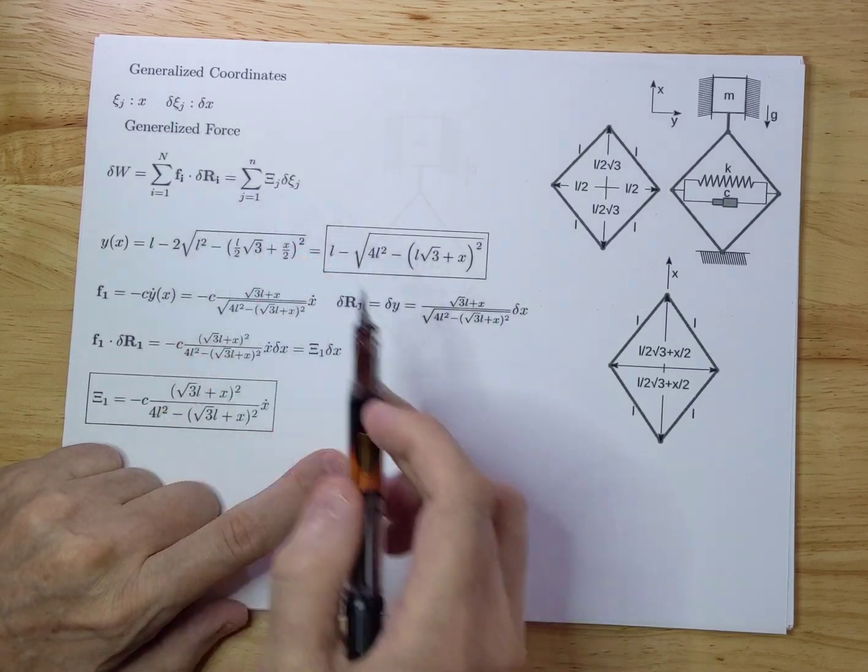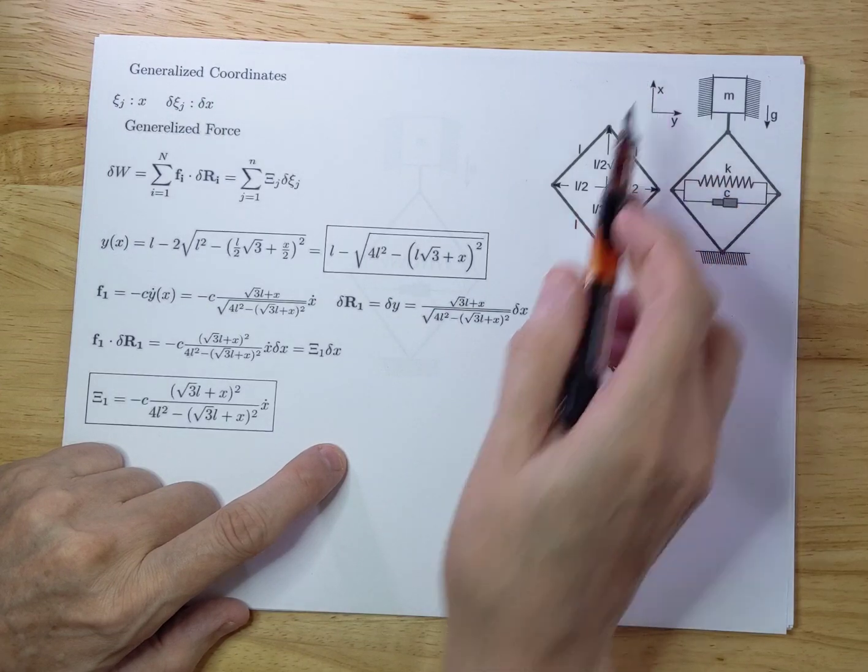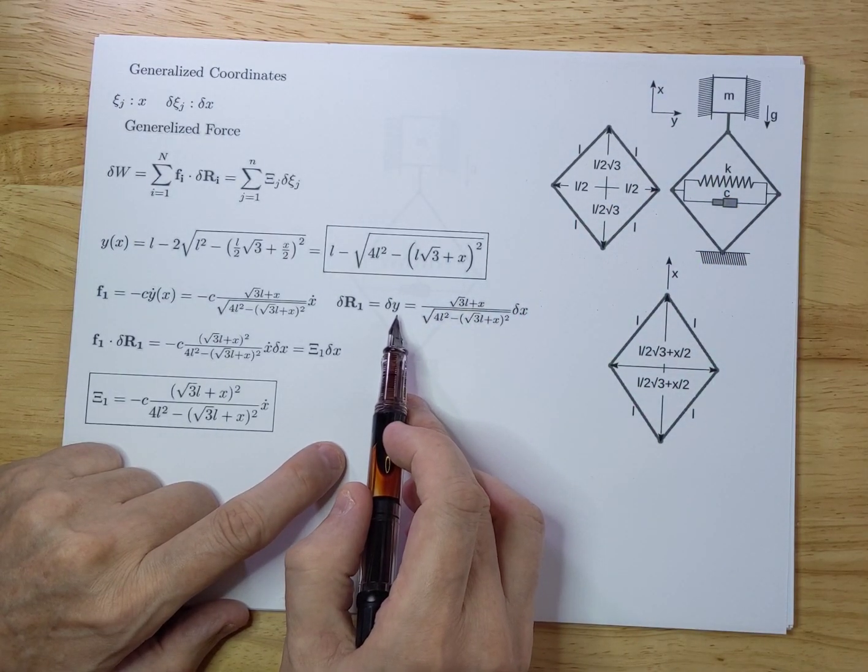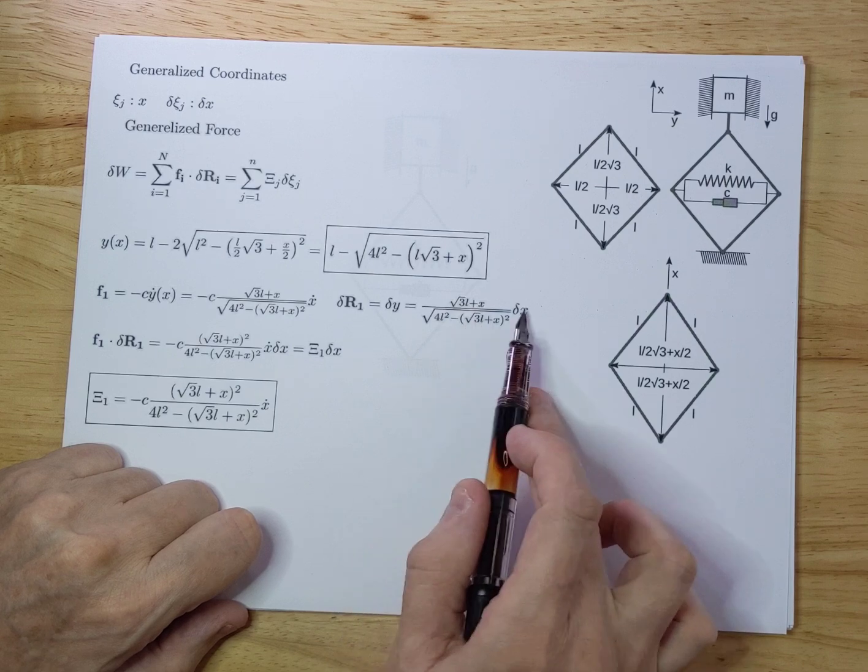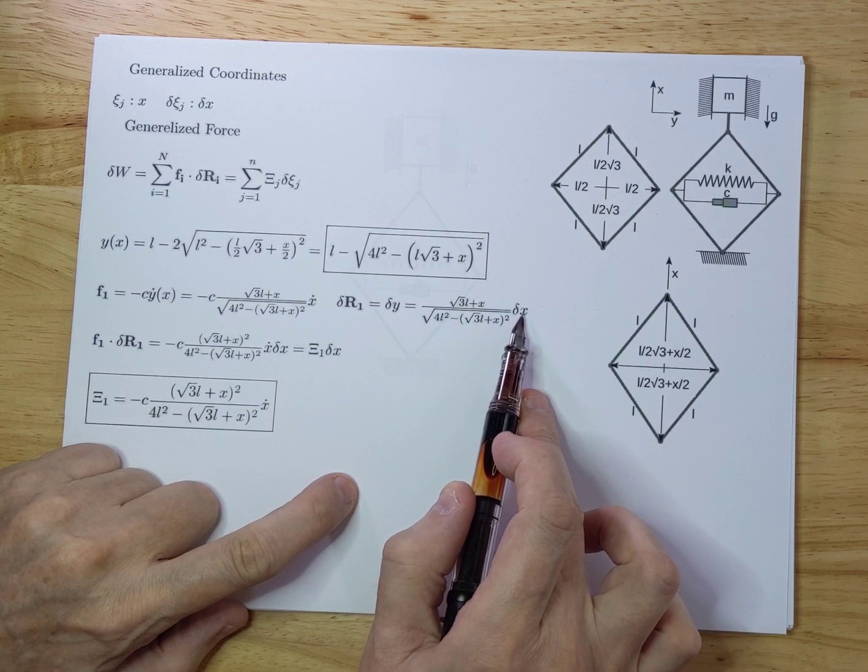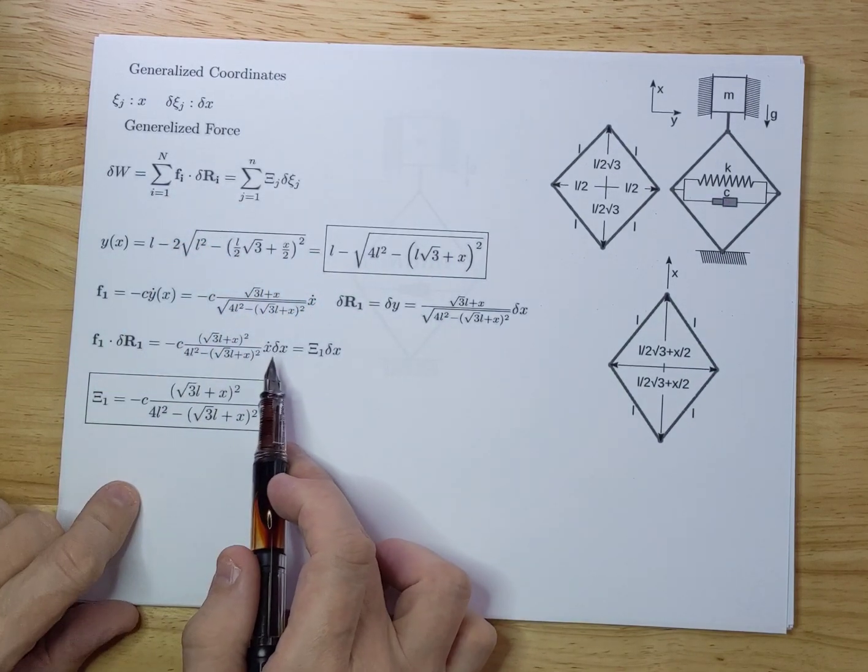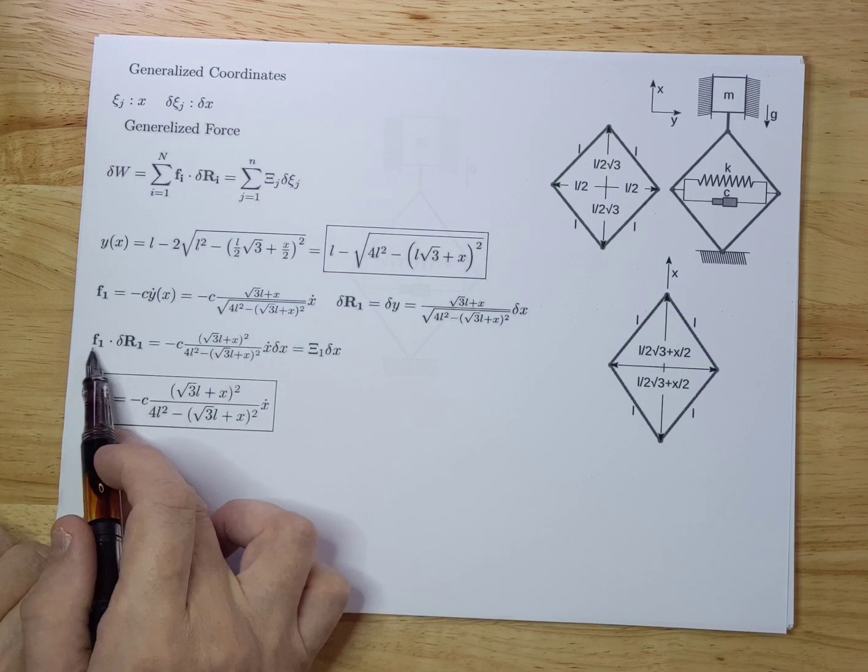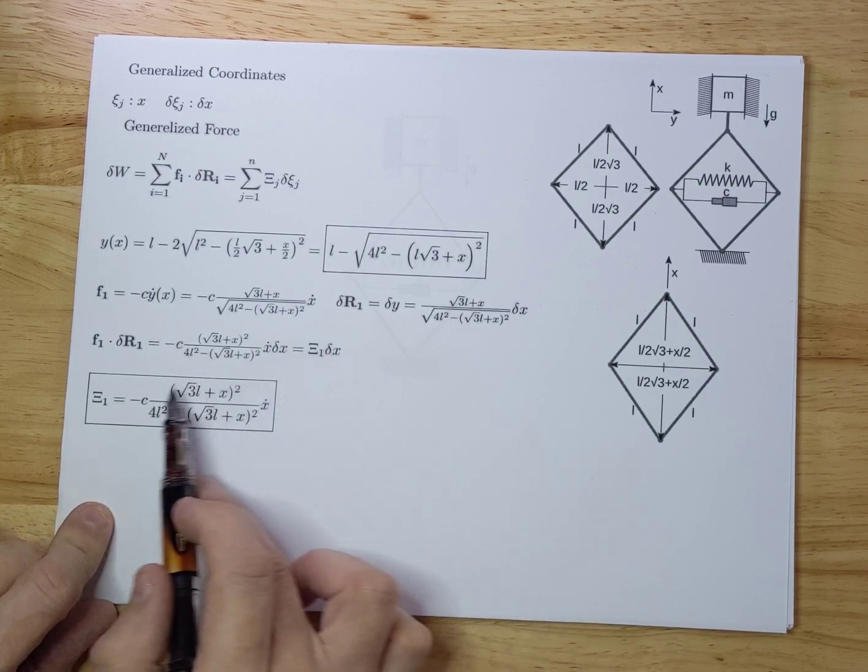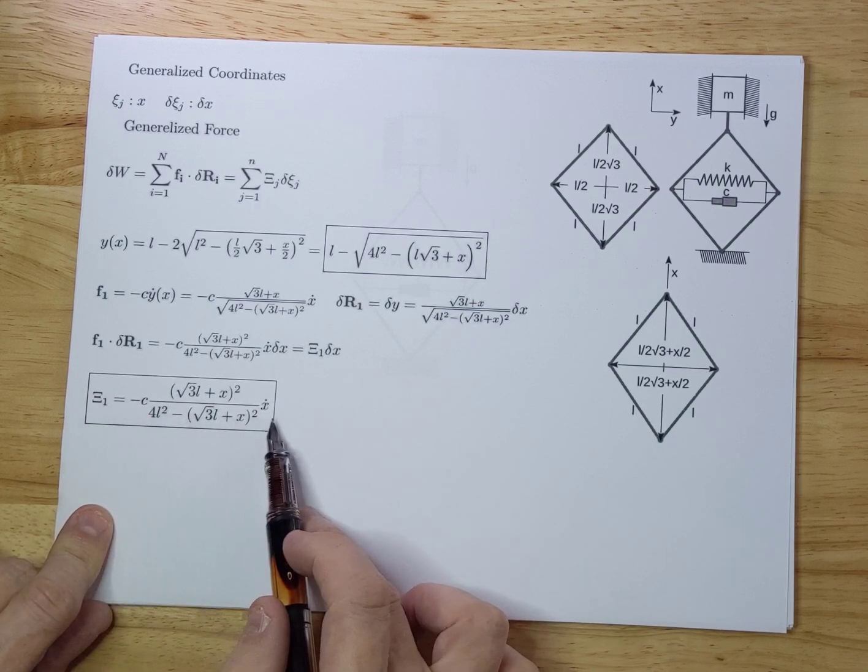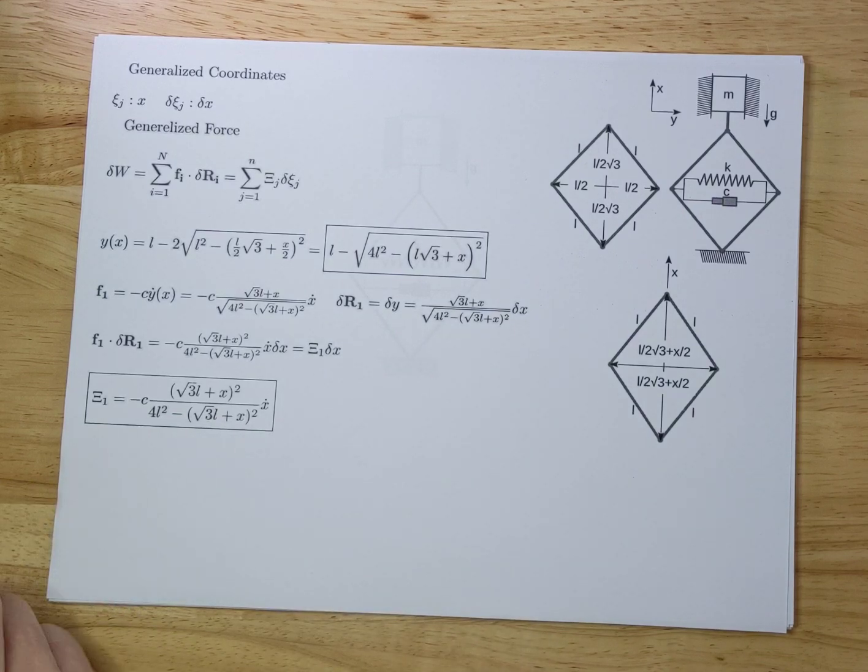For the infinitesimal displacement, dR1, which is dY in the Y direction, you have to differentiate Y. You get a similar type of expression as this, but now you have to multiply it by dX. Now we can combine these two and we get this infinitesimal work by multiplying these two factors. Multiply it out, and you get your generalized force. You can read off your generalized force, depicted over here. That's the generalized force we later need when we want to calculate the equations of motion.